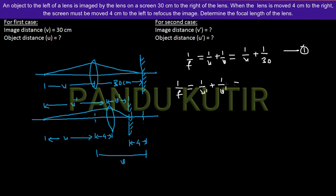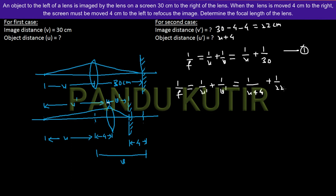U-prime is equal to u plus 4. V-prime is equal to the new image distance. The total image distance v is equal to 30 cm. If you move the screen 4 cm closer, you reduce the image distance from the lens to 22 cm.